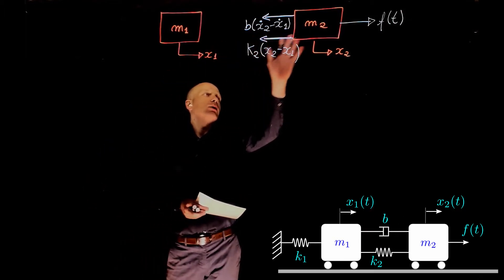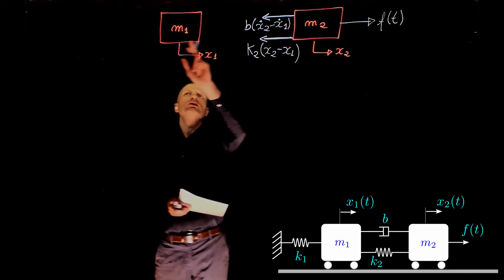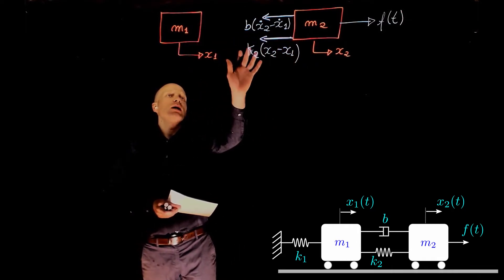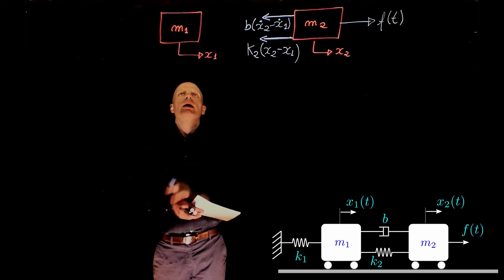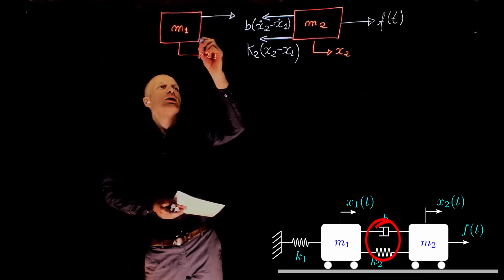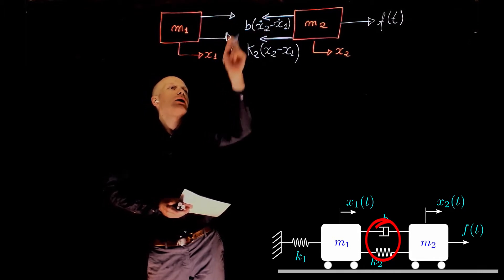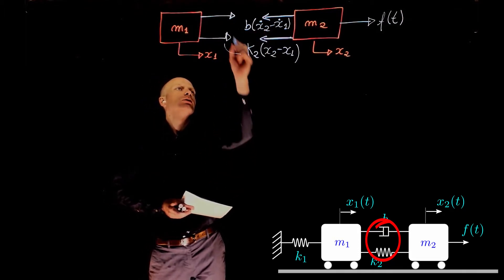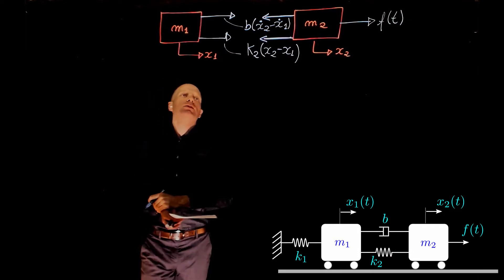These forces that are now applied to mass M2 will also be applied to mass M1. They have the same magnitude, but now they make mass M1 move to the right. These two forces are exactly the same magnitude but opposite direction.